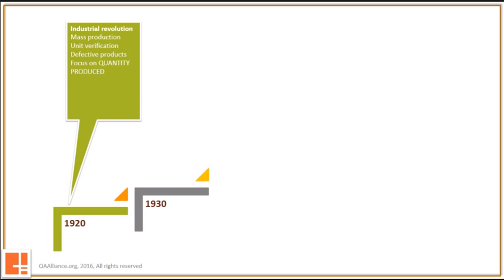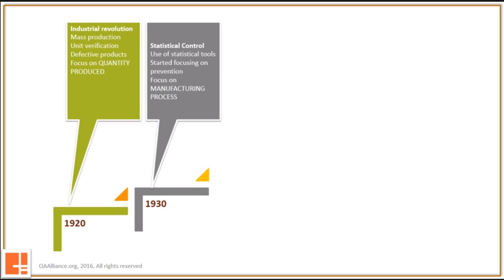1930 came with the time of statistical control. Walter A. Shewhart, who was a statistician of Bell Labs, introduced process control. This made quality relevant not just for the end product, but also for the processes that created it. He introduced the concept of control charts after realizing that processes yield data and this data can be analyzed. His concepts are very relevant even today and are referred to as statistical quality control. Quality in the 30s had established its importance during the processes also.